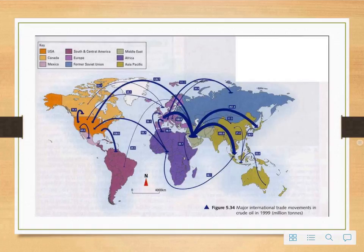Here is another example of a flowline map, and this represents the major international trade movements in crude oil in 1999. As you can see, once again, the thickness represents volume.